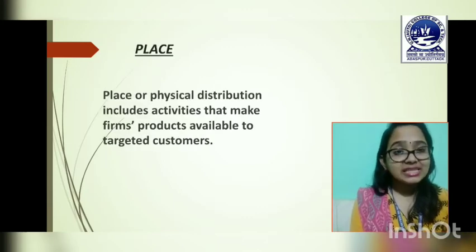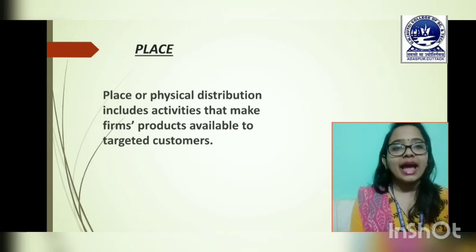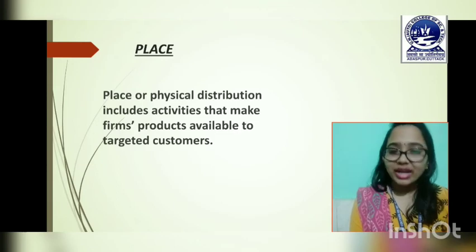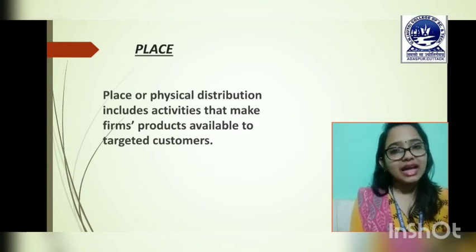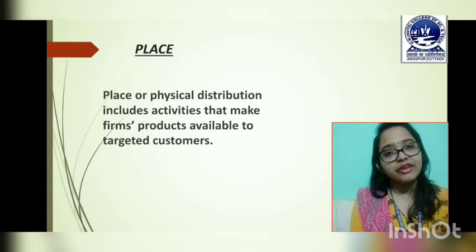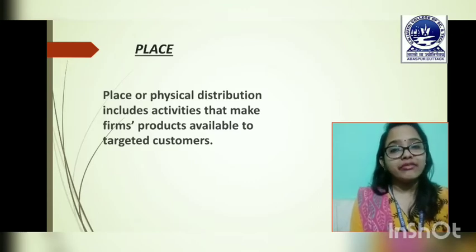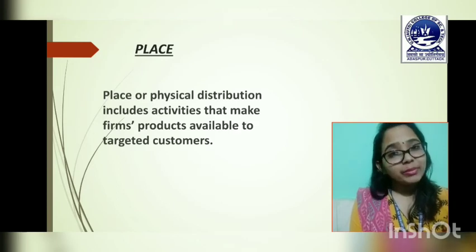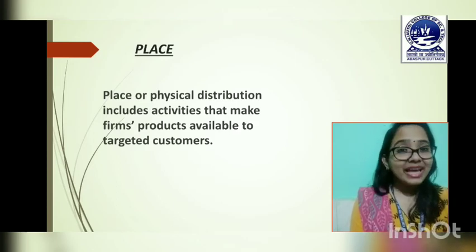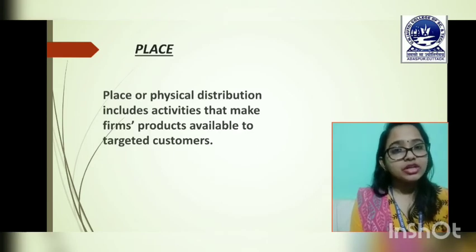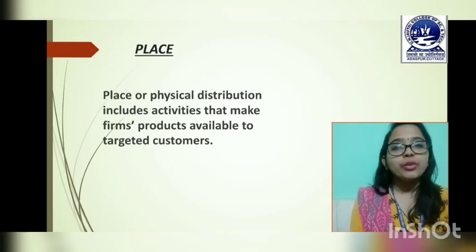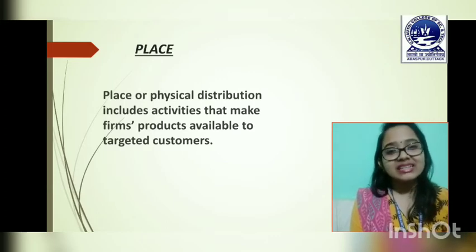The next element is place. Place mix is otherwise known as physical distribution mix, which includes activities that make a firm's products available to target customers. For example, if I have created a product in a factory and want to make it available to consumers, that is what place mix addresses. It refers to all those activities necessary to make the product reach the consumer.